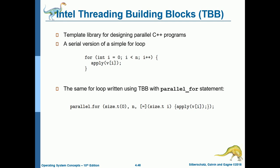Intel Threading Building Blocks, or TBB, is a template library for designing parallel C++ programs. A serial for loop can be written using TBB with the parallel_for statement — it is the same as a regular for loop but with 'parallel_' prepended before 'for'.